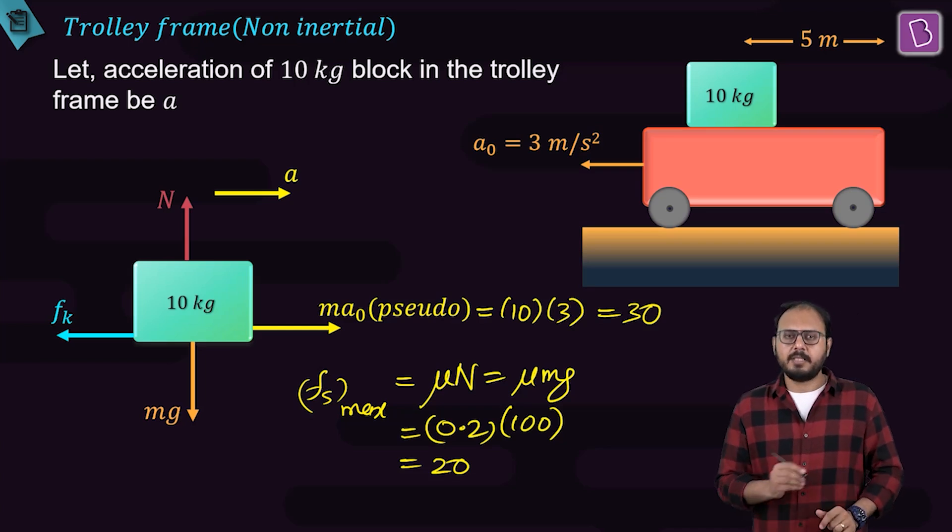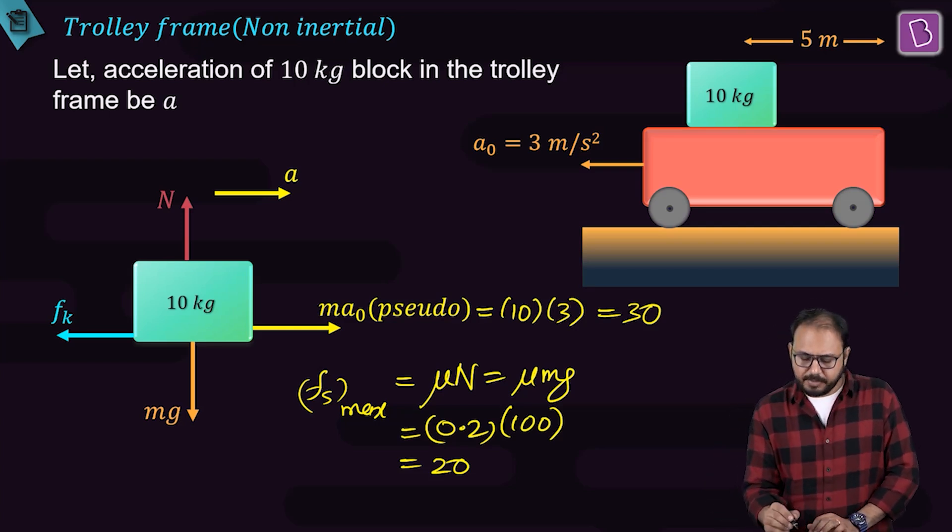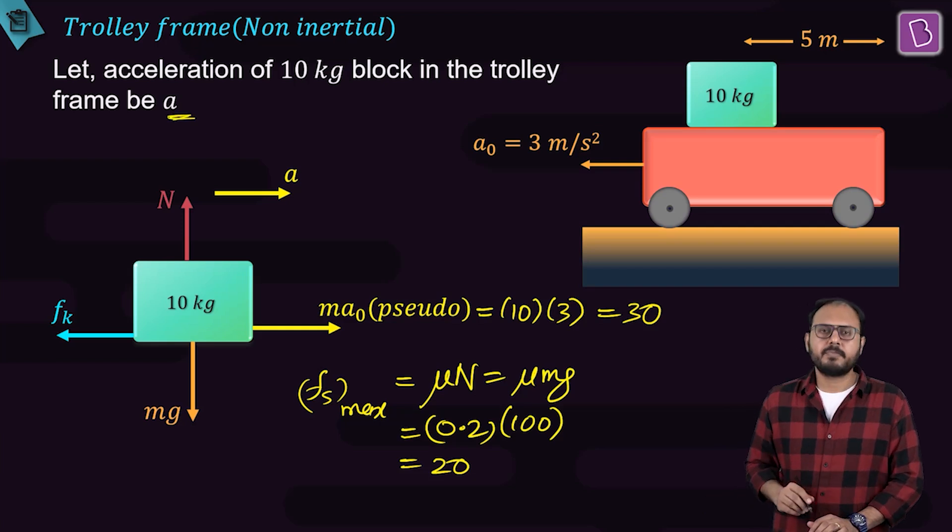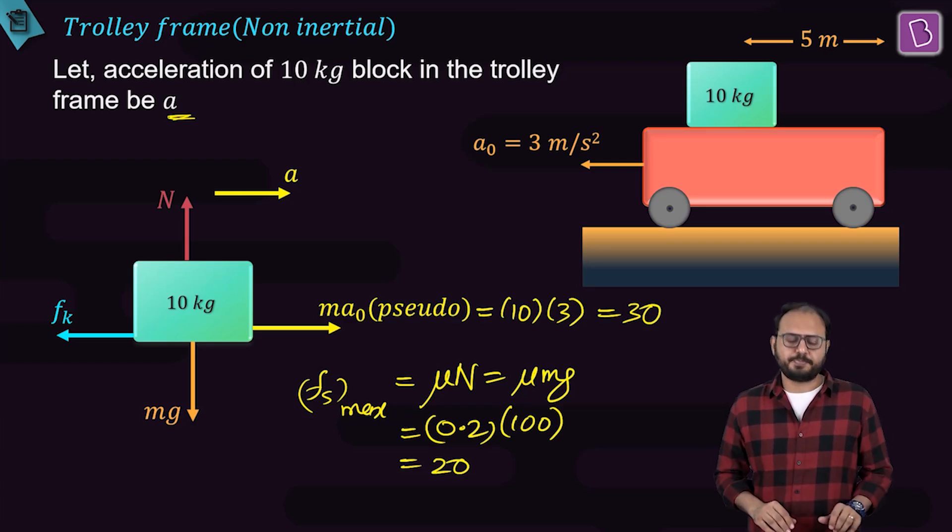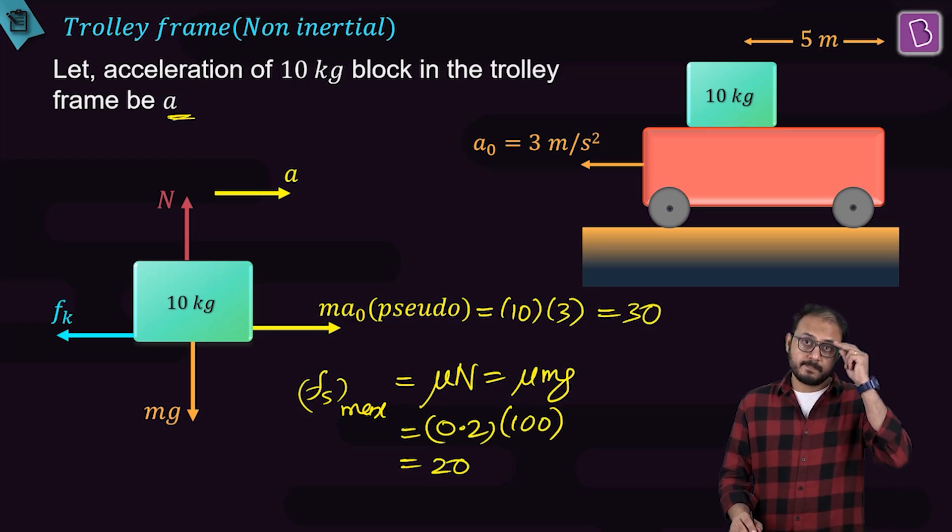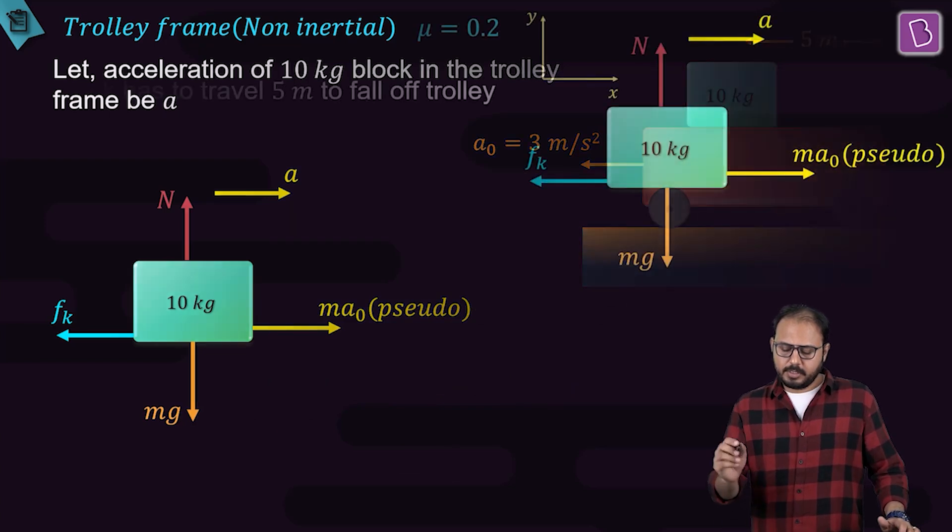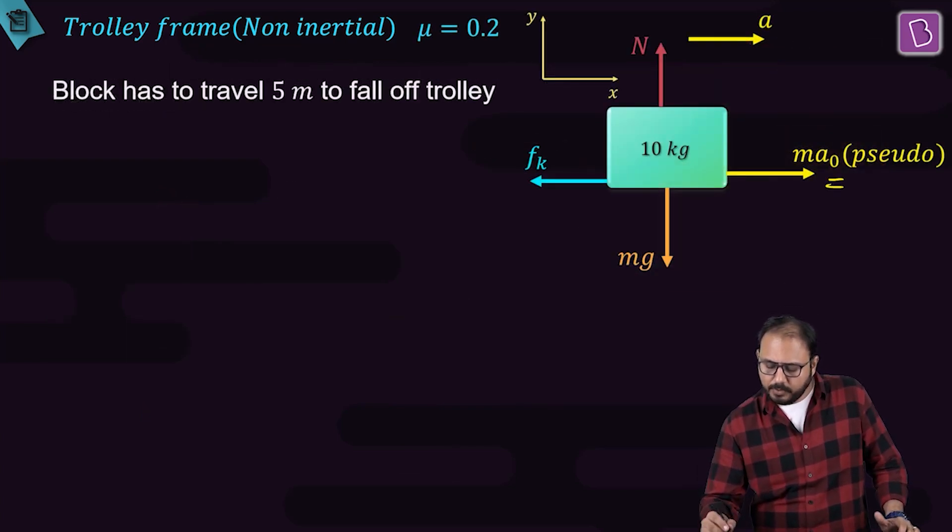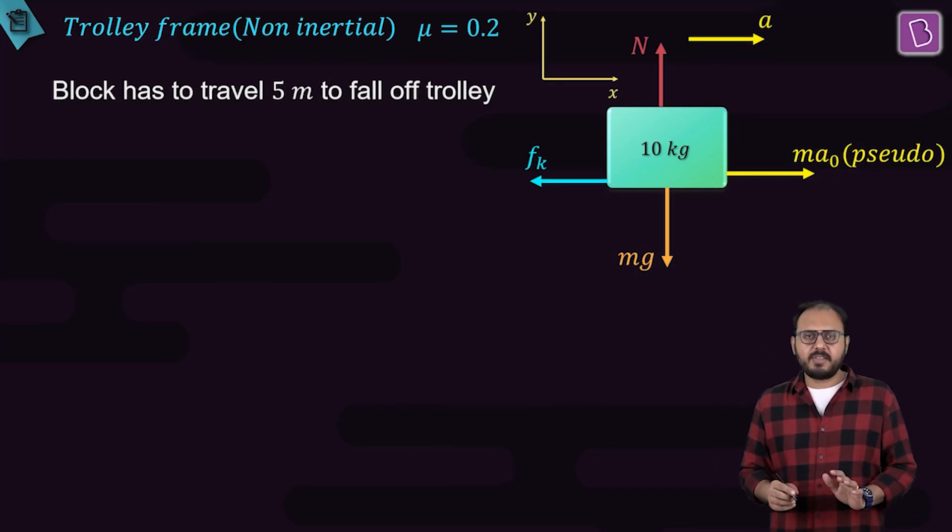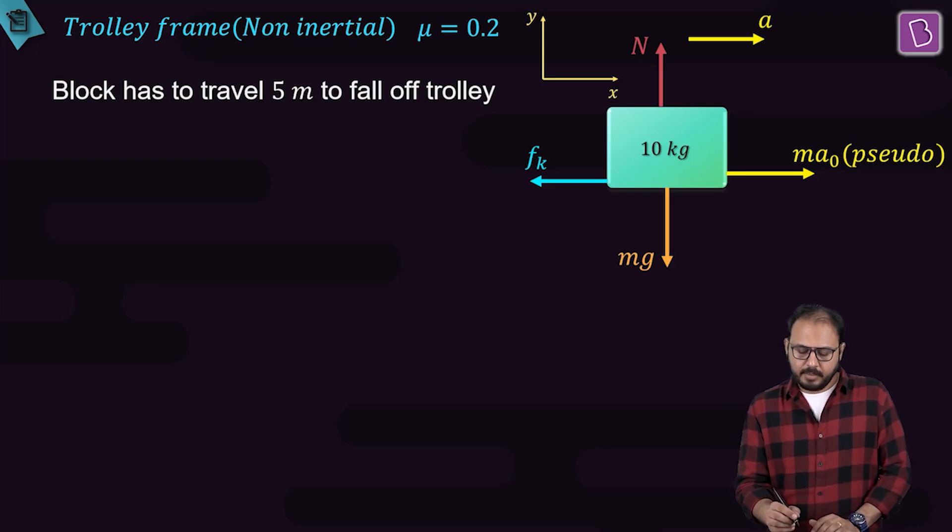Since there is only one mu given, mu s is 0.2, mu k is 0.2, FSmax is 20, Fk is 20. So you are sure in trolley frame, the block will have an acceleration backwards. Let that acceleration be a. The pseudoforce Ma0 is equal to 30. The block has to travel 5 meter to fall off the trolley. That means I need the value of A now. How do I find the value of A?